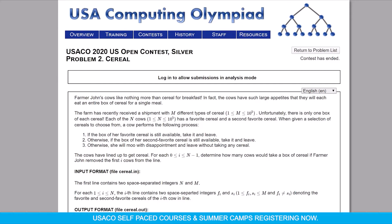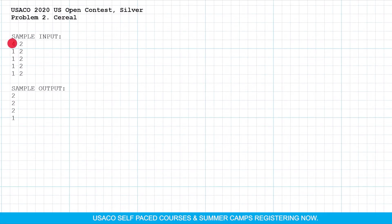In this video we are going to solve the Cereal problem from US Open 2020 Silver. We have N cows and M types of cereal, and each cow has its first favorite and second favorite cereal type.